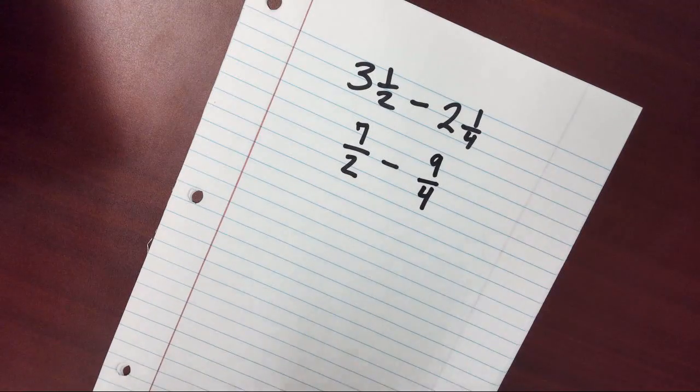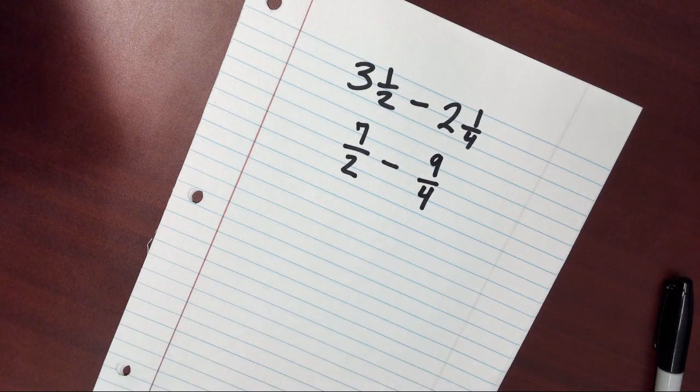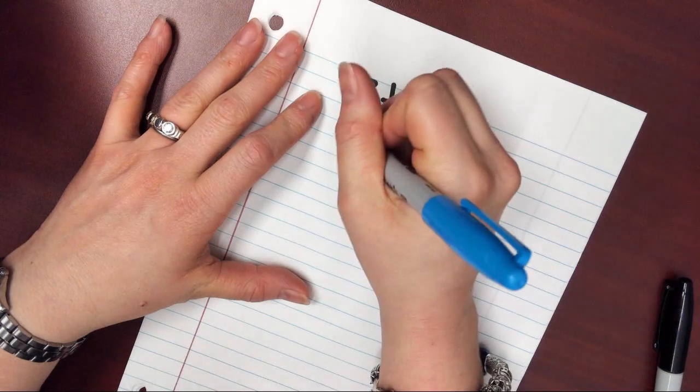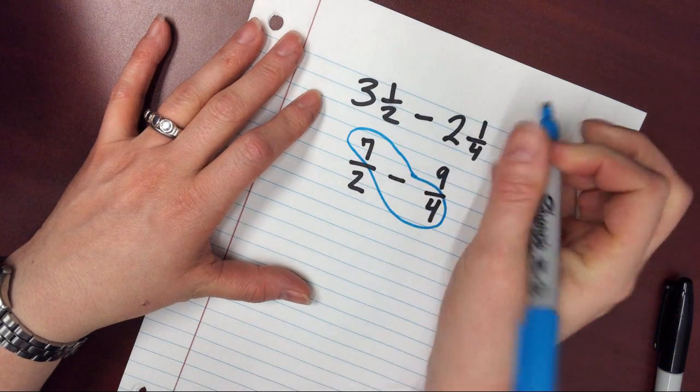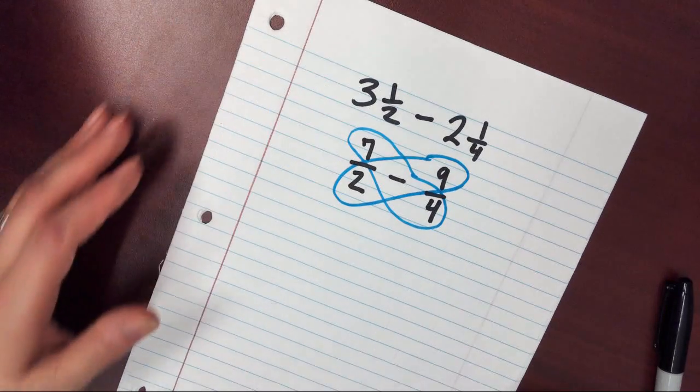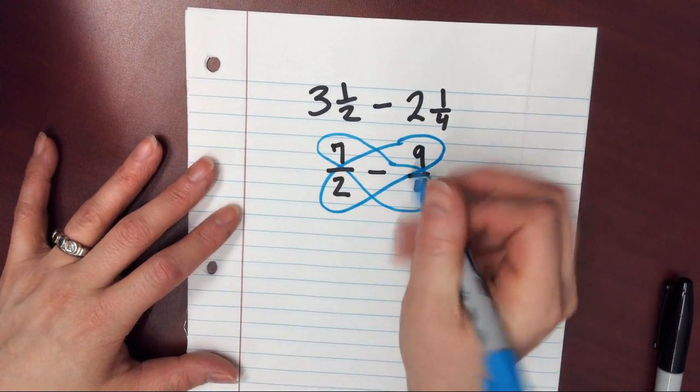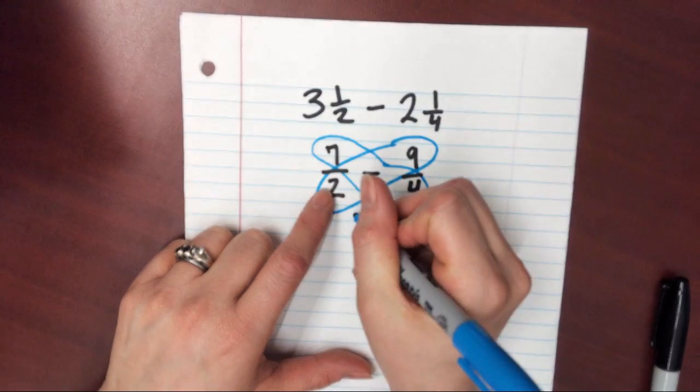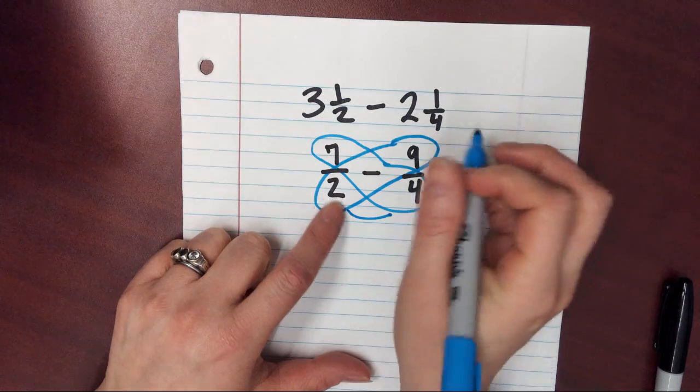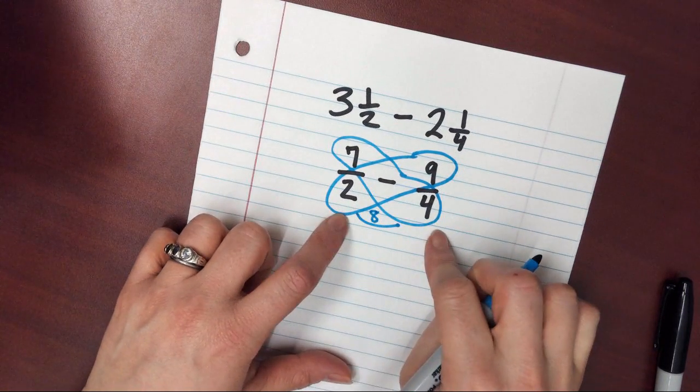Now this is where it gets a little bit complicated, and I'm going to switch marker color. So I'm going to draw a butterfly. Here's my butterfly, and here's my butterfly. Okay? So the first thing I'm going to do for my butterfly is I'm going to multiply these two guys right here. Okay? So I'm going to multiply those 2 times 4 is 8. Easy peasy, right?